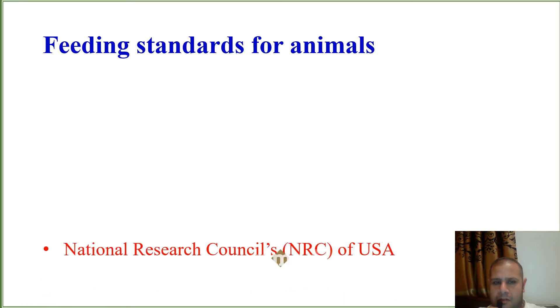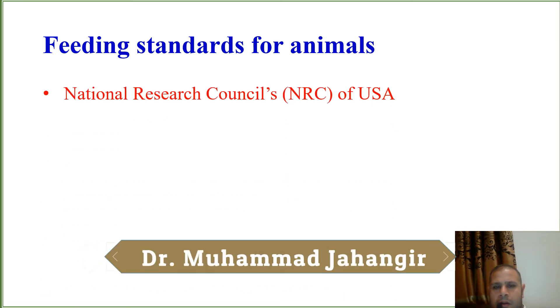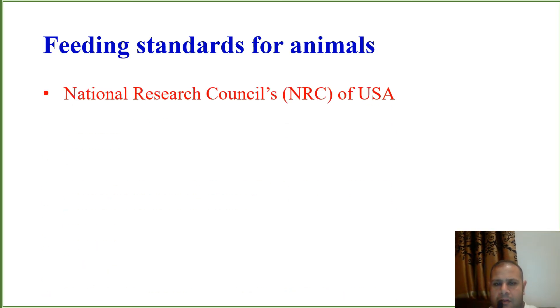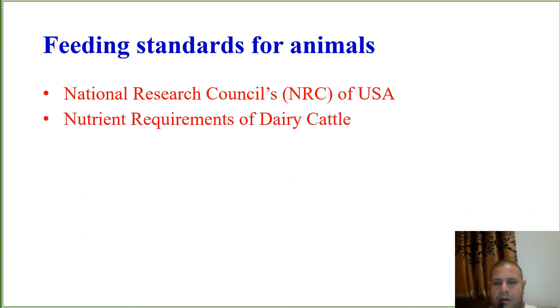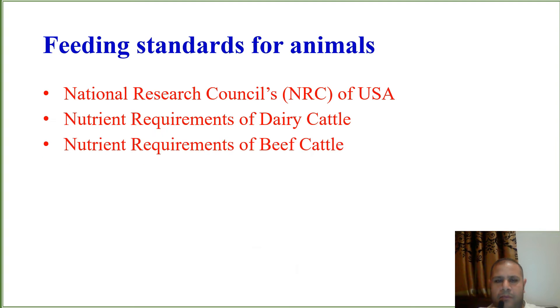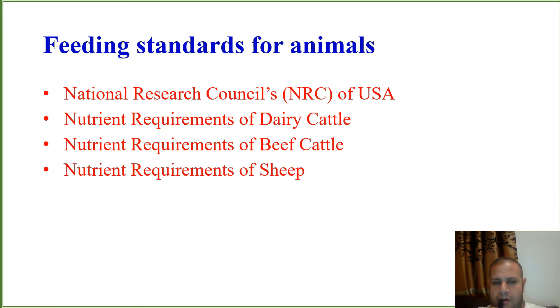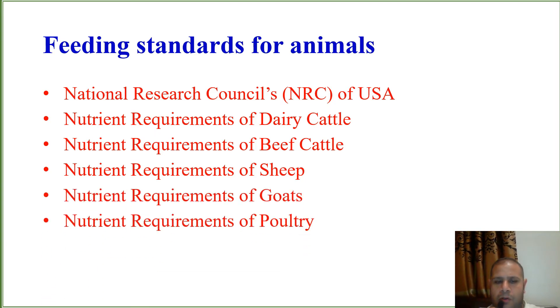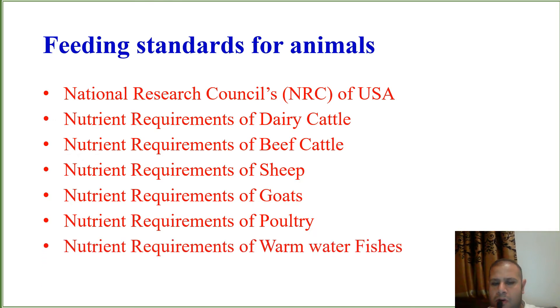There are some feeding standards for animals that are provided by various organizations and countries. Number one is the National Research Council (NRC) of USA: Nutrient Requirements of Dairy Cattle, Nutrient Requirements of Beef Cattle, Nutrient Requirements of Sheep, Nutrient Requirements of Goats, Nutrient Requirements of Poultry, and Nutrient Requirements of Warm Water Fish.